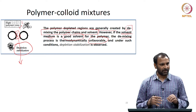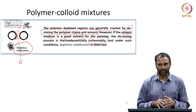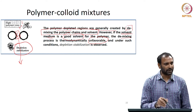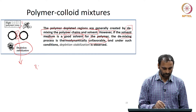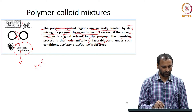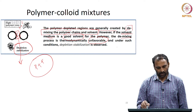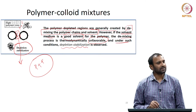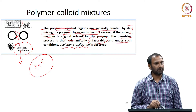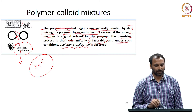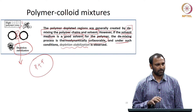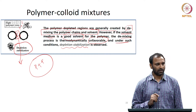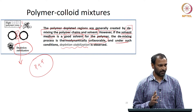However, if somehow this demixing is prevented, then the region between the two particles will always contain polymer plus fluid. Such a case is referred to as depletion stabilization. Depletion stabilization is a case where the formation of a depletion zone is not favored.